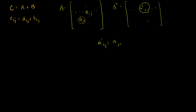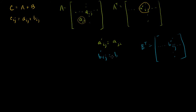You can make the same argument for B. If I make B transpose, the entry in the i-th row and j-th column I'll call B prime ij. So B prime ij is equal to the entry in matrix B that's in the j-th row and i-th column, Bji. This is essentially the definition of the transpose — if I'm in the third row and second column now, it's what was in the second row and third column.